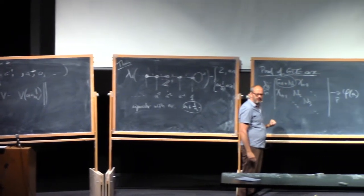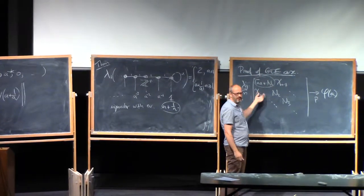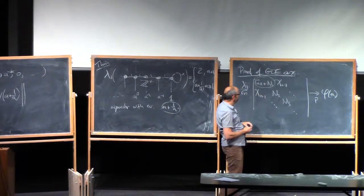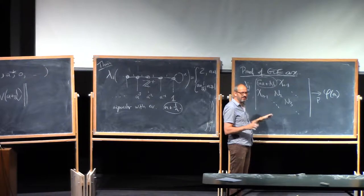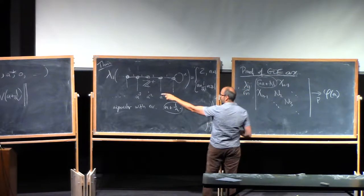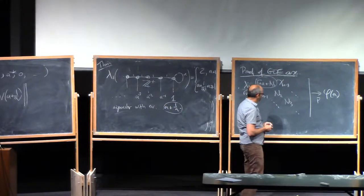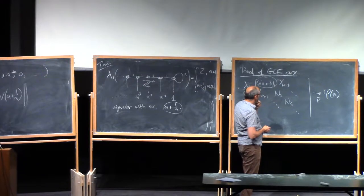And then, because these chis are very close to one when you divide them by square root of n, there's some error coming from these normals. But again, that's going to zero. Remember, k is fixed. We're just looking up to finite depth. So that's fine.